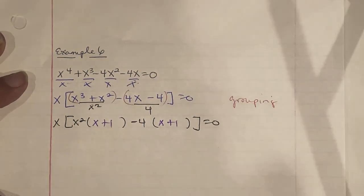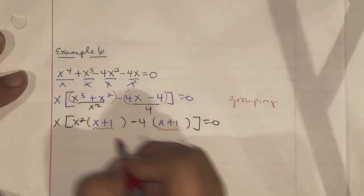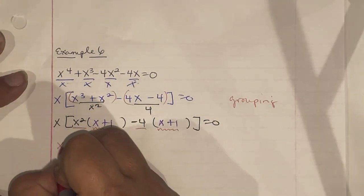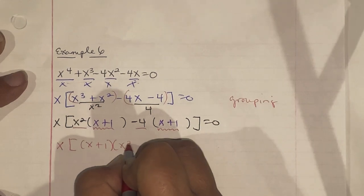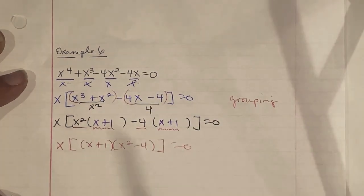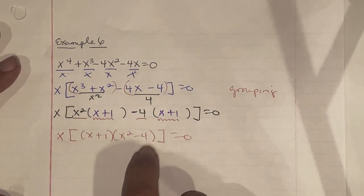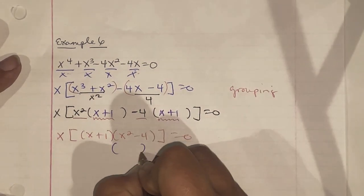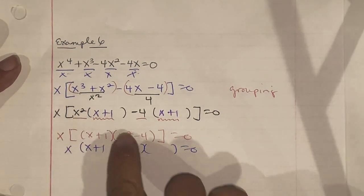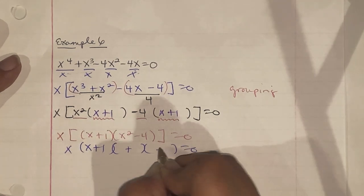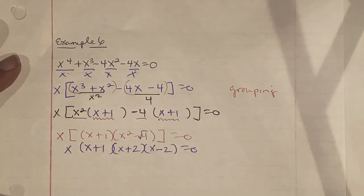Since both groups share the same binomial (x + 1), that becomes one factor and we collect the leftover terms. We still have x on the outside from earlier. So we now have x(x + 1)(x² - 4) = 0. Recognizing x² - 4 as a difference of squares, it factors into (x + 2)(x - 2) since the square root of 4 is 2.